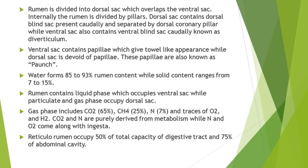Water forms 85 to 93 percent of the rumen content while solid content ranges from 7 to 15 percent, so maximum content of the rumen is in liquid form. Rumen contains a liquid phase which occupies the ventral sac, while the particulate phase and gas phase occupy the dorsal sac.